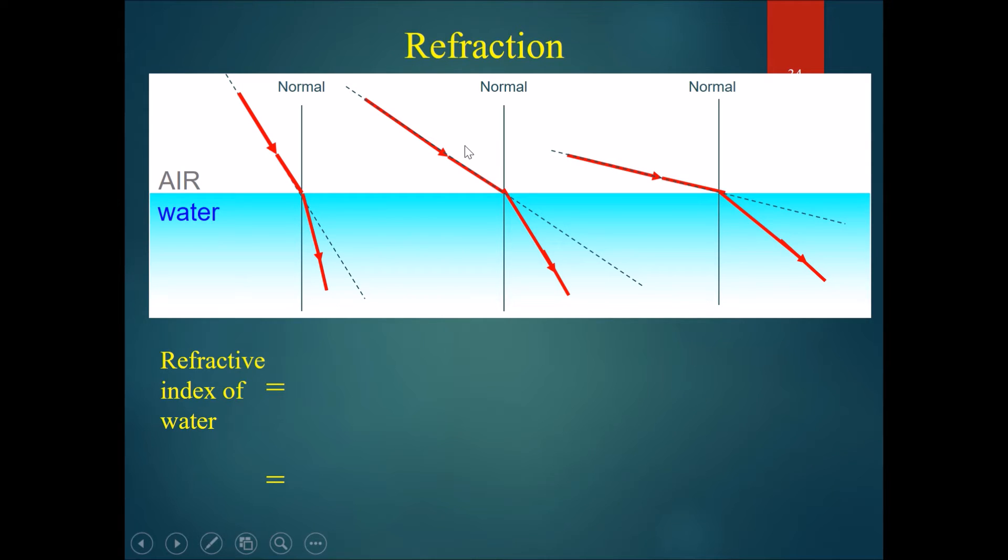Let's show you what it means. Look at these three different refractions at three different angles. Let's call these three angles of incidence i1, i2, and i3, and let's call these angles of refraction r1, r2, and r3.